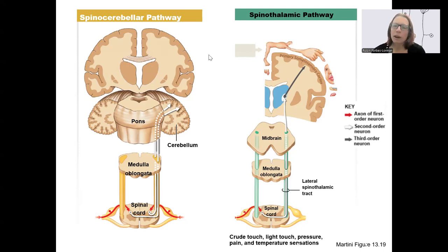On the right was our spinothalamic conscious pathway. These types of information coming in from the periphery, red is the first order neuron. Second order neuron is in white, going from the spinal cord up to the thalamus. And then the third order neuron is going from the thalamus up to the primary somatosensory cortex, that post-central gyrus where somatosensory information is processed.